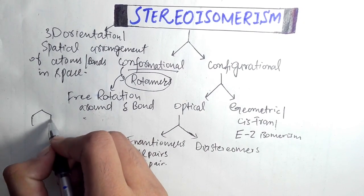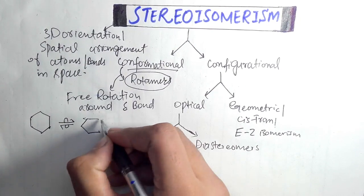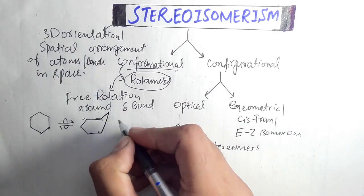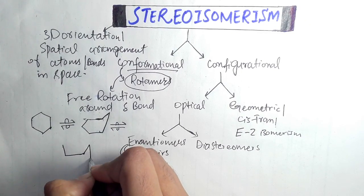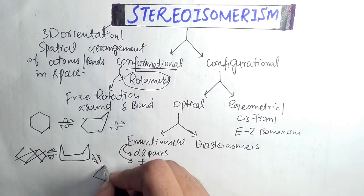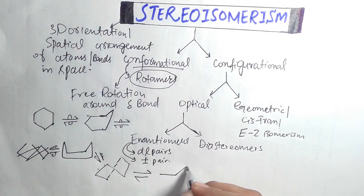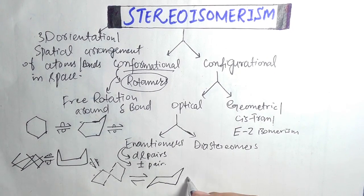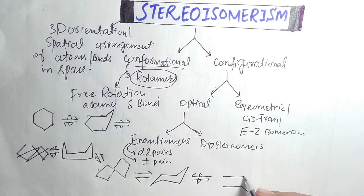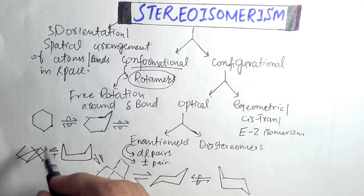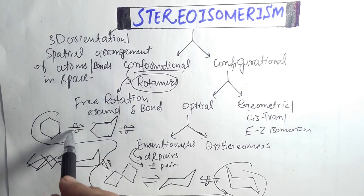For example, cyclohexane: when I flip cyclohexane it converts into a half-chair conformation. Flipping again converts it into a boat-like conformation, then into a twist-boat conformation. Flipping further converts it into a chair-like conformation, and then into another chair-like conformation. We are moving from the least stable to the most stable conformation — the chair conformation is the most stable and the twist-boat is the least stable.